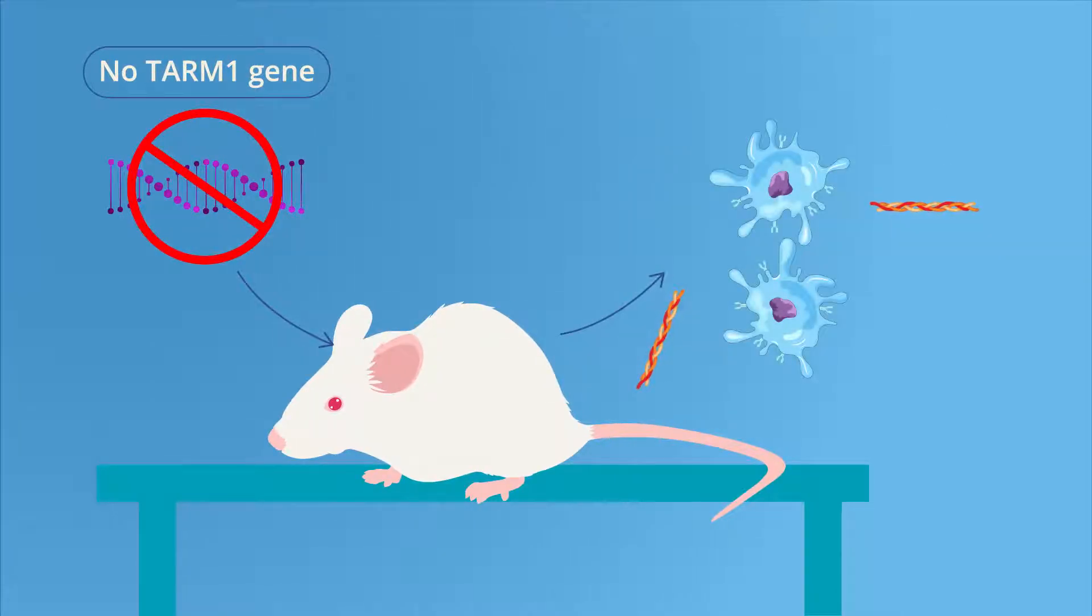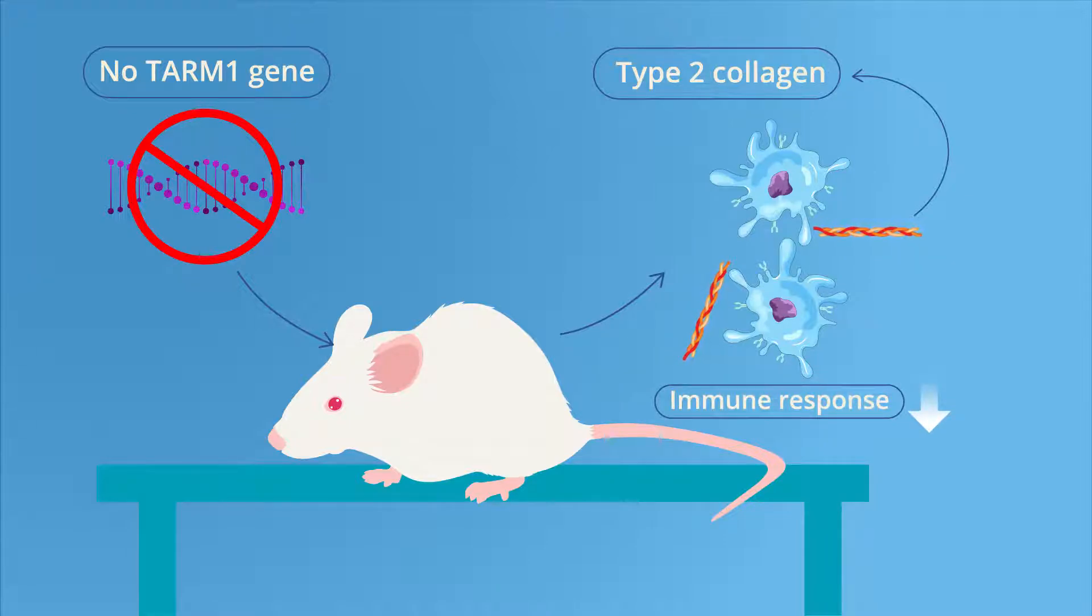The researchers observed that the immune system's response to type 2 collagen, which is crucial for the development of CIA, was suppressed in TARM1-deficient mice.